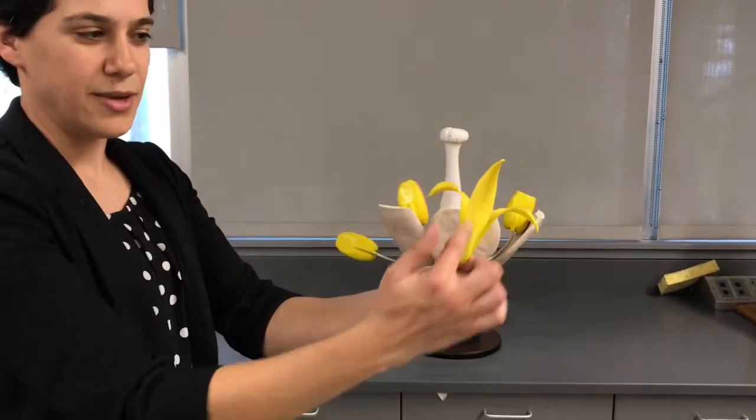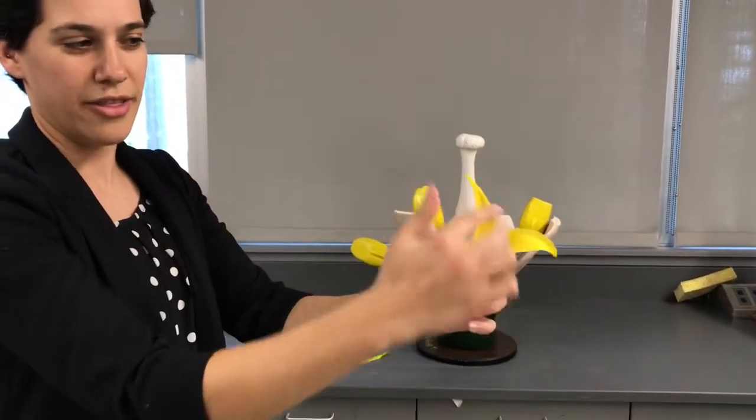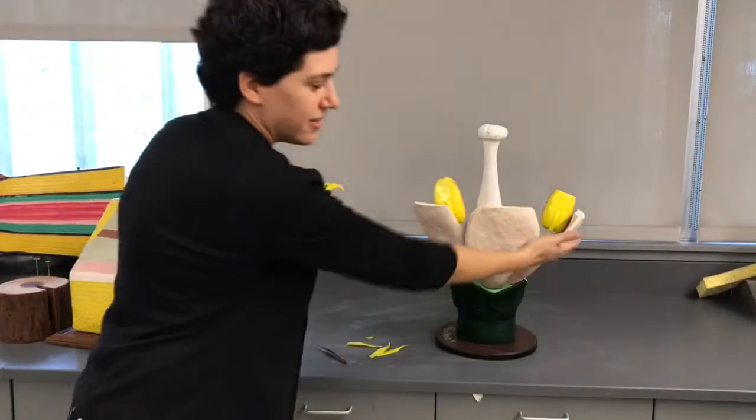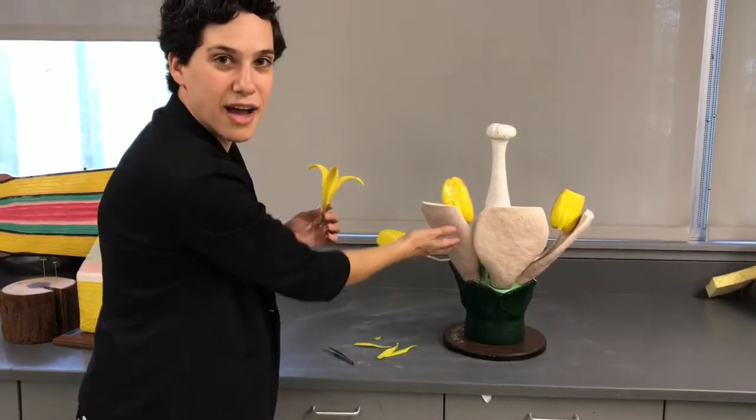The next thing that you would see, the next layer, are the petals, which are here on the lily, and these are where the petals would be on this flower.